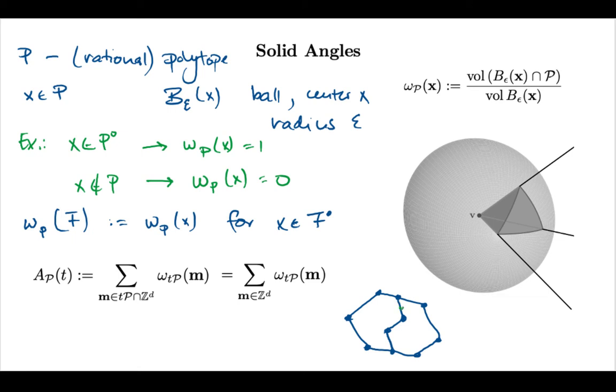like here, the solid angle sum will add up because if I have a point, let's say over here, then the solid angle that I'm measuring with respect to one polytope and the one I'm measuring with respect to another polytope, they will nicely add up to give me the solid angle that I'm measuring in the union.